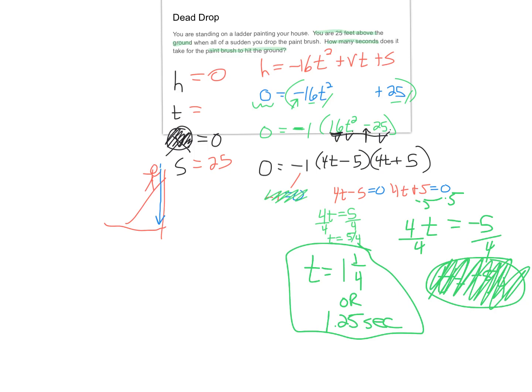One key note: if you do not have difference of squares, you'll need to factor another way. Keep the zero-T term in your equation and use the slide or grouping method to factor. Just keep that in mind if difference of squares doesn't apply.